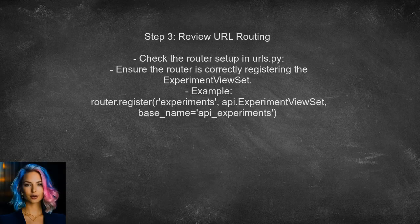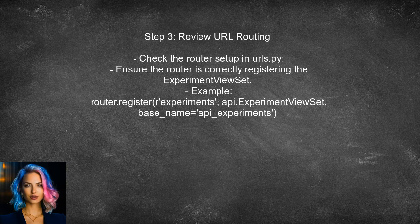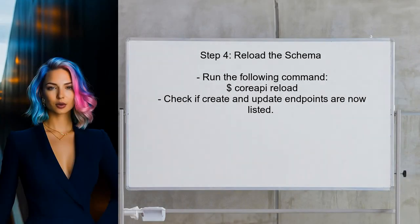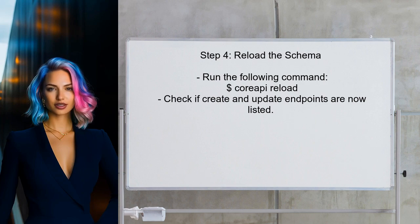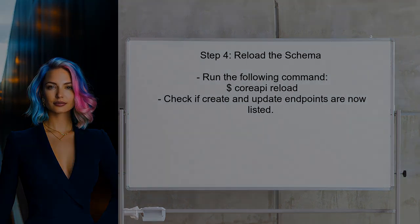After confirming the view set configuration, the user should check the URL routing to ensure that the endpoints are correctly registered. This can be done by reviewing the router setup in the urls.py file. Once the routing is verified, the user should reload the schema using the CoreAPI command to see if the create and update endpoints now appear. This can be done by running the CoreAPI reload command.